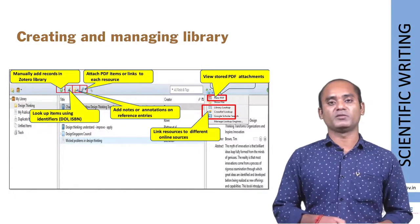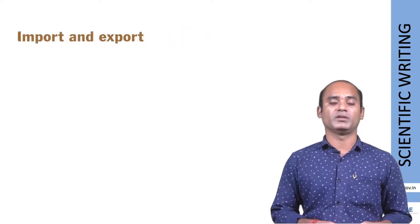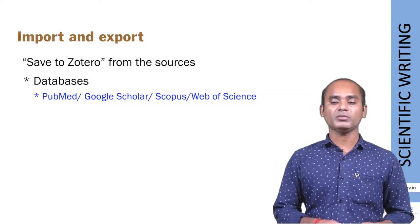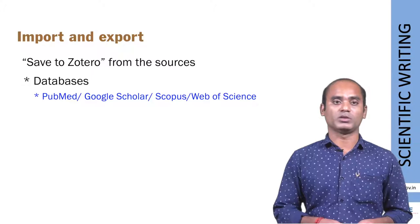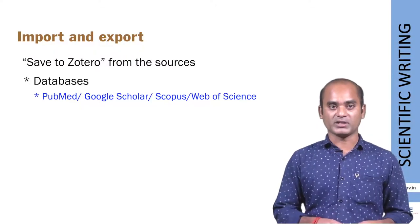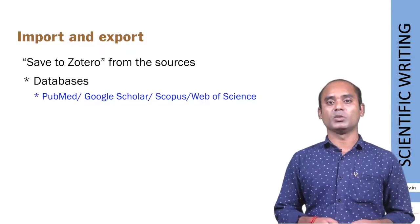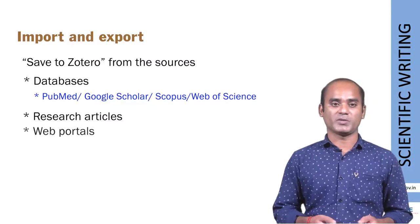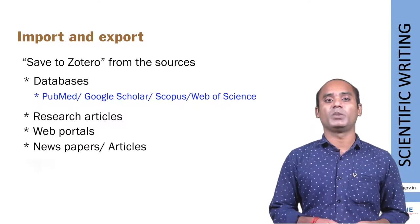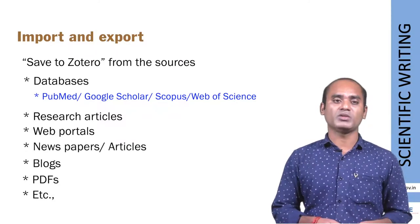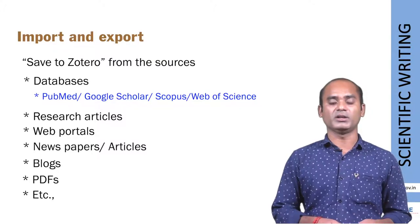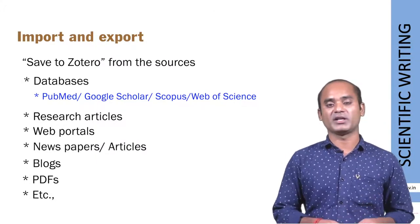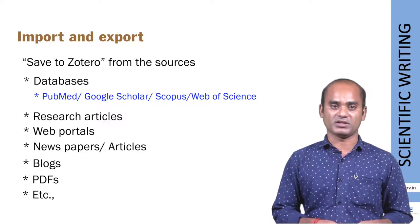Once you have created your folder, the next step is to input data related to your research topics or dissertations. You can get published articles from databases like PubMed, Google Scholar, Scopus, and Web of Science, as well as from web portals, websites, newspapers, news articles, blogs, and PDFs. We will now see how to import selected articles from these databases.